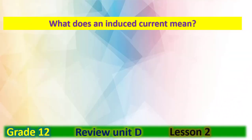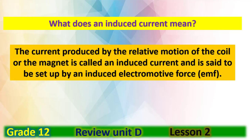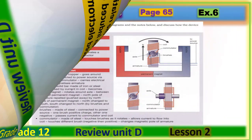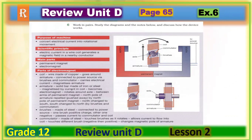So what does an induced current mean? The current produced by the relative motion of the coil or the magnet is called an induced current, and is said to be set up by an induced electromotive force, or EMF. Now please open your course book to Exercise 6, page 65.